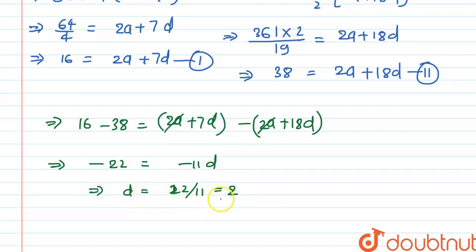So the common difference of this AP will be 2. And from first equation we can say that 16 is equal to 2a plus 7 into 2. And further we can write this, that is 16 minus 14 is equal to 2a, or we can say that a will be equal to 2 by 2, this is equal to 1.